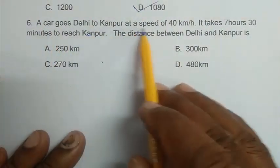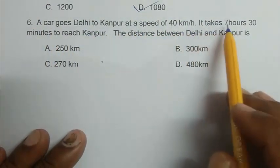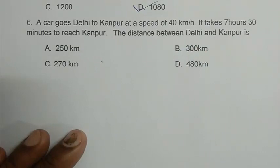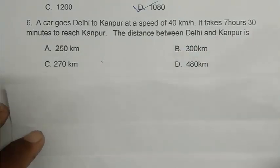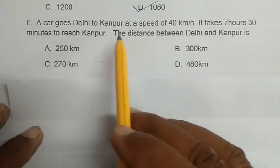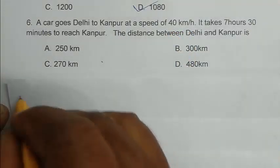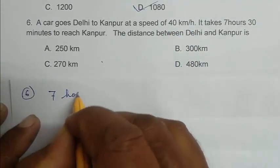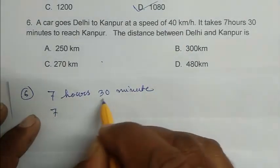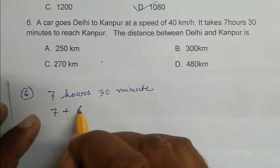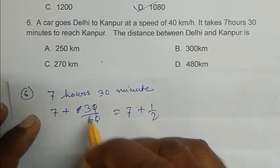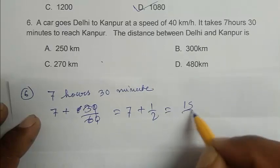Question number 6. A car goes Delhi to Kanpur at a speed of 40 km per hour. It takes 7 hour 30 minutes to reach Kanpur. The distance between Delhi and Kanpur is. So first we convert 7 hour 30 minute into hour. After that we multiply hour with the speed. So 7 hour 30 minutes.